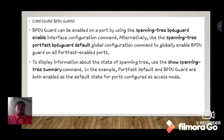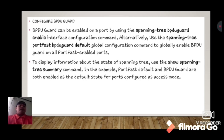BPDU Guard can be enabled on a port using the spanning-tree bpduguard enable interface configuration command. Alternatively, use the spanning-tree portfast bpduguard default global configuration command to globally enable BPDU Guard on all PortFast-enabled ports. To view the state of spanning tree, use the show spanning-tree summary command. PortFast default and BPDU Guard are both enabled for ports configured in access mode.